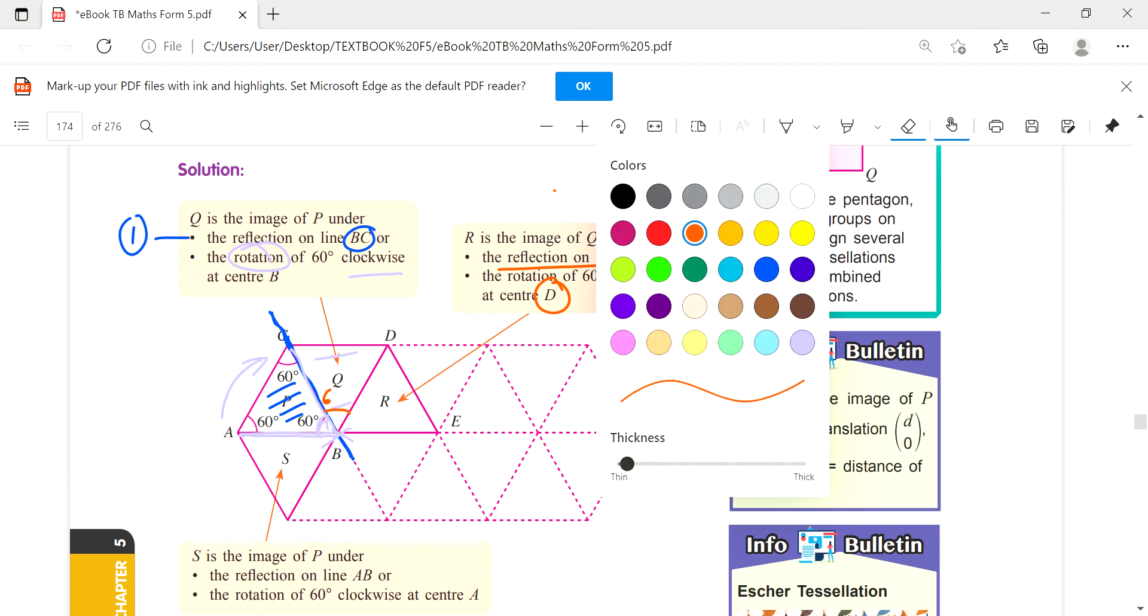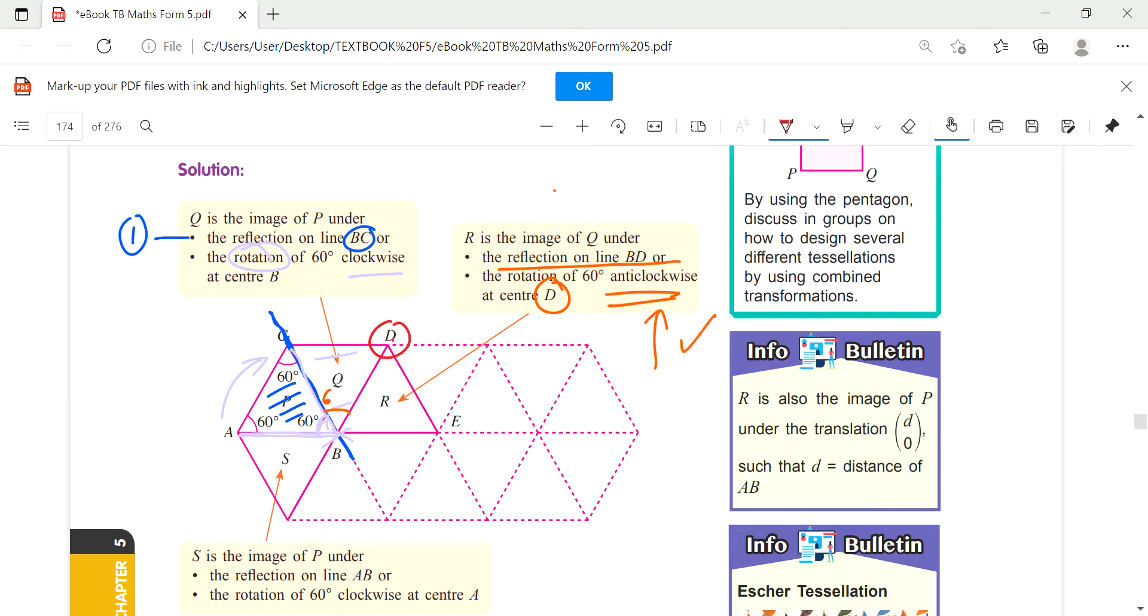If the center is B - if D is the center, so of course the center always shows whether it's clockwise or anticlockwise.